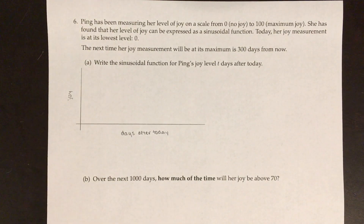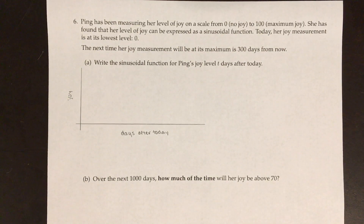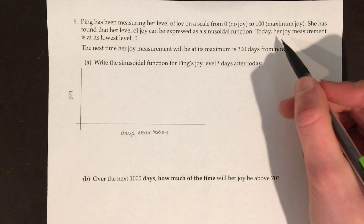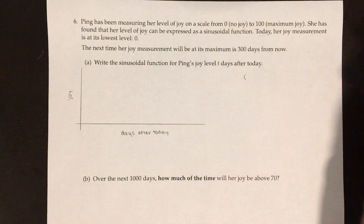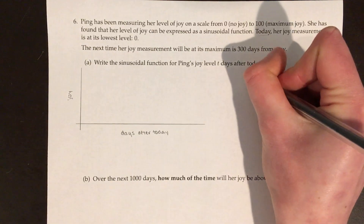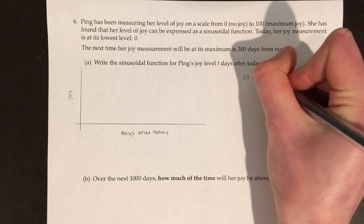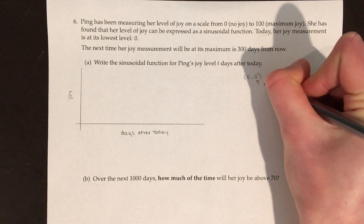Part A is writing the sinusoidal function for her level of joy, t, days after today. So the first thing I'm going to do is write down the information that I was given. Today, which is zero days from today, her joy measurement is at its lowest level, zero. So one of the coordinates is (0, 0), and that is the minimum.